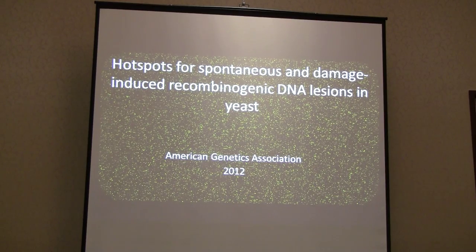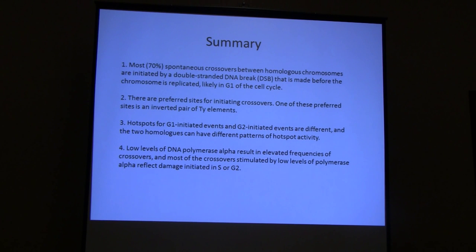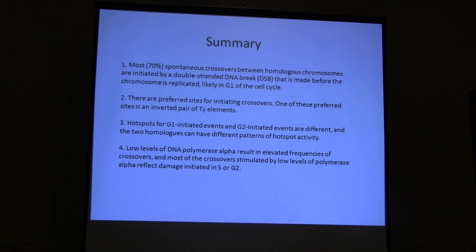The summary of the talk will be that most spontaneous crossovers are actually induced by a double-strand break in unreplicated DNA in G1 and then likely repaired in G2. There are preferred sites for initiating mitotic crossovers, and at least one of these is a pair of inverted transposons separated by about 25 base pairs. Hotspots for G1-initiated and G2-initiated events are different, as are hotspots from two different homologues. Finally, I'll discuss how low levels of DNA polymerase alpha elevate crossovers, and most of those events are initiated by a break in S or G2.